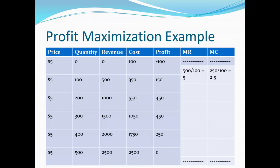Marginal revenue is the change in revenue divided by the change in quantity between any two lines. So here, from the first to the second line, revenue changes by 500 and quantity changes by 100, so the marginal revenue would be 500 divided by 100, or $5.